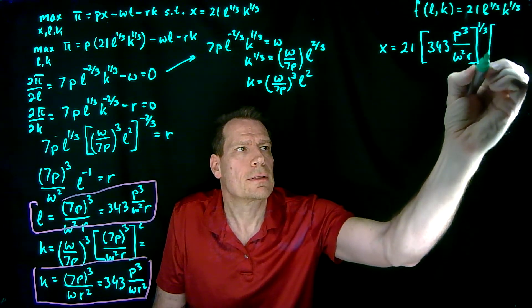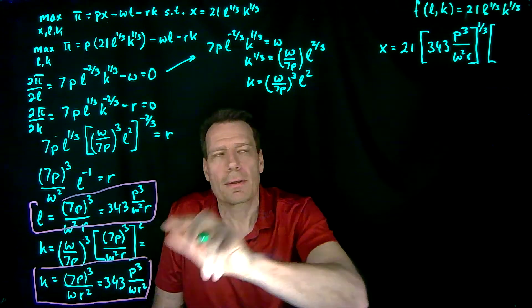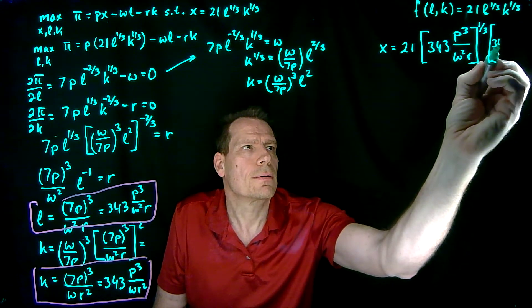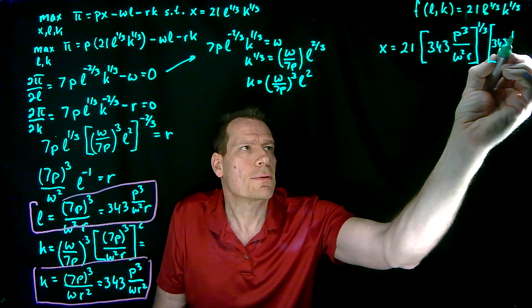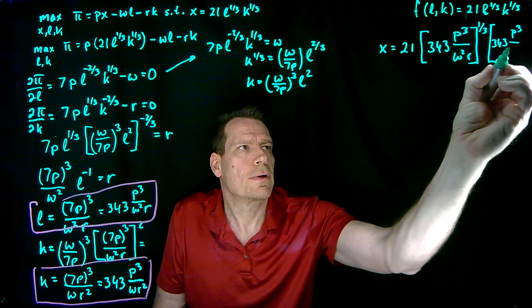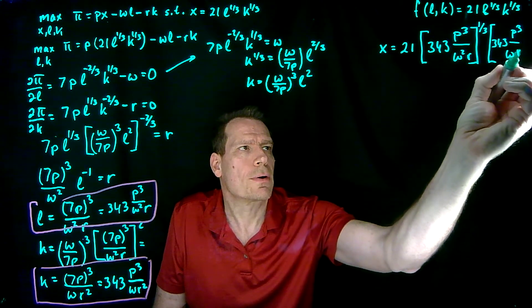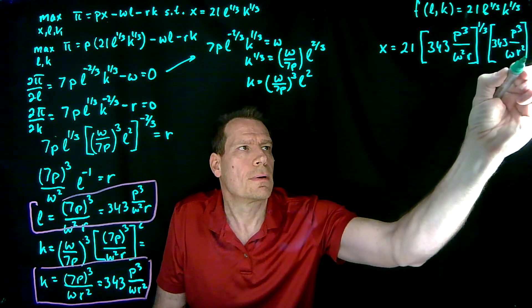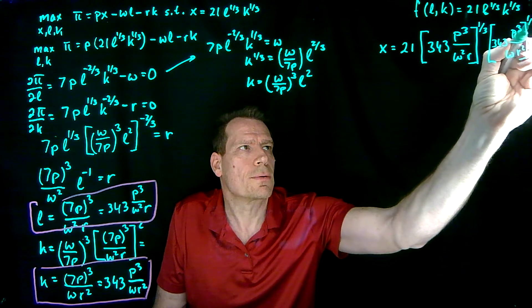Similarly, we put capital in: 343 times P to the third over W times R squared. Both terms are taken to the one-third power.